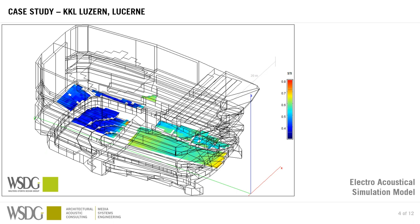Let's look at this electro-acoustical simulation model. This is the same tool that was used in the previous video of Zurich Airport. We have a three-dimensional representation of the space. We are simulating only half of it because the room is perfectly symmetrical, so it's sufficient to just look at one half — the other half would be the same. Here we just look at the data set from one side.